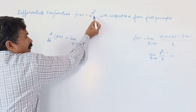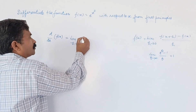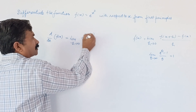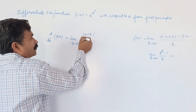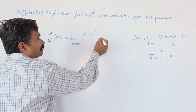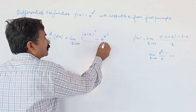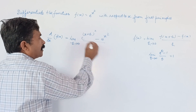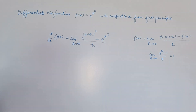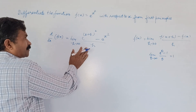We can write it as: e raised to the power (x+h) squared, minus e raised to the power x squared, divided by h. So we have our expression from first principle.